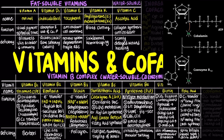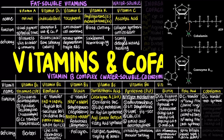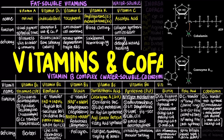Vitamin B12, also known as cobalamin, participates in two different reactions. It serves as a one-carbon donor in methionine synthase. Cobalamin also plays a role in intramolecular rearrangement in L-methylmalonyl-CoA mutase, converting L-methylmalonyl-CoA to succinyl-CoA during isoleucine and valine catabolism. Deficiency in vitamin B12 leads to anemia, numbness, and loss of balance.